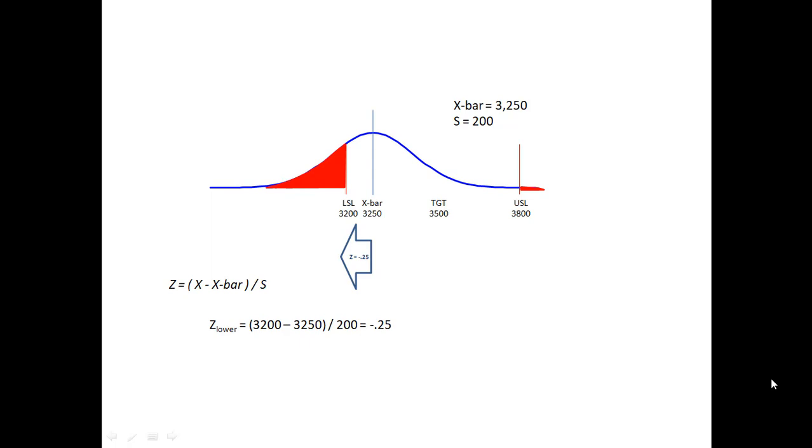What is the distance from x-bar to the lower spec limit in terms of numbers of standard deviations? It's 3200 minus 3250 divided by 200, which equals negative one quarter. You can see that visually - it's a difference of only 50 and s was 200. The negative tells you that the x you're looking at is to the left of the mean.